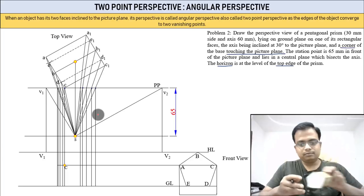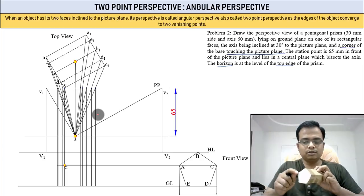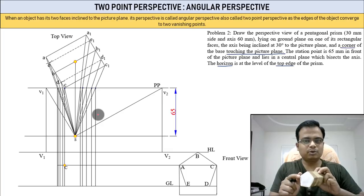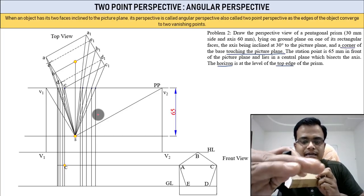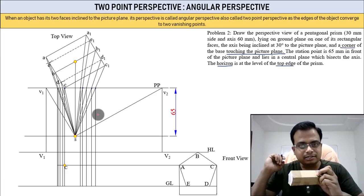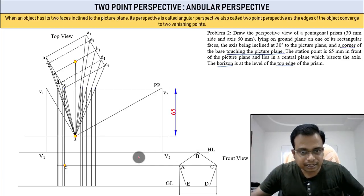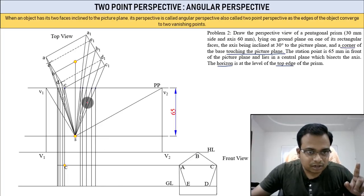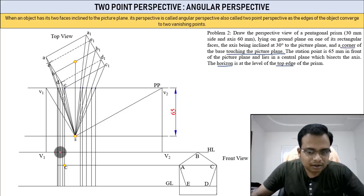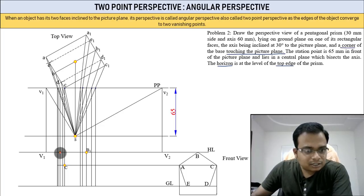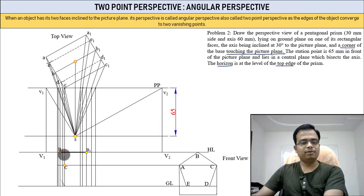Make sure the pencil is properly sharpened as the points are very close together. First mark point C — it's in contact with the picture plane. Draw a line from here and find the intersection of this vertical line with the picture plane. That gives you point C in the perspective.